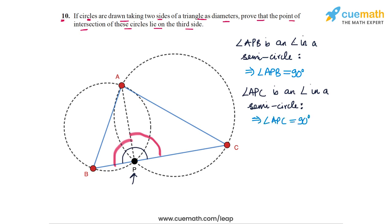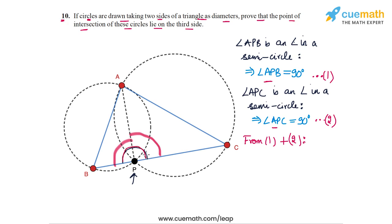From (1) and (2), adding the two equations: angle APB + angle APC equals the whole angle BPC. Therefore, angle BPC equals 90 + 90, which is 180 degrees. This means that BPC is a straight line.